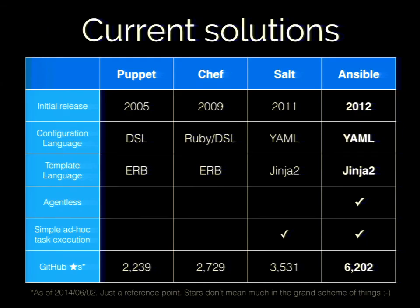What do we have available on the market today? Puppet came out in 2005 — it's a very good and reliable product. One thing I don't particularly like is that it uses a DSL, a domain-specific language based on Ruby, so you have to learn a new configuration language and a different template language. You also have to install something on every single server you manage, which is a little annoying.